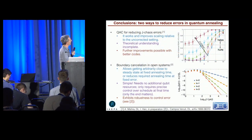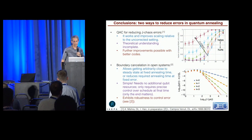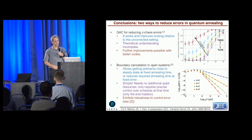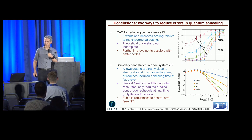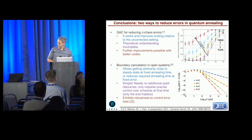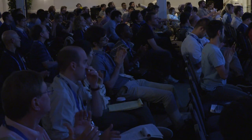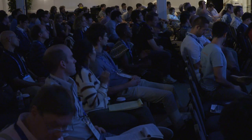It even exhibits some robustness to control errors. So it turns out you can even get away with imperfectly implementing the vanishing derivatives at the end. And if you want to see the details, check out our paper. And that's it. Thanks.